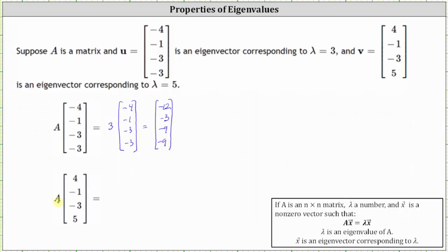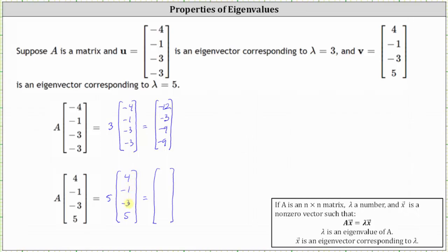Next, we have matrix A times the eigenvector vector V, which is equal to the eigenvalue of five times vector V, which is equal to the vector 20, negative five, negative 15, 25.